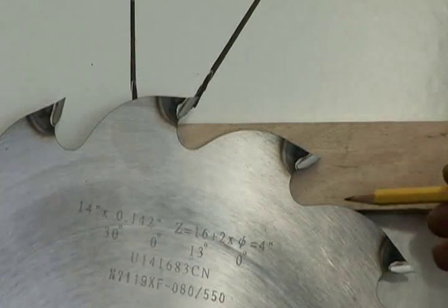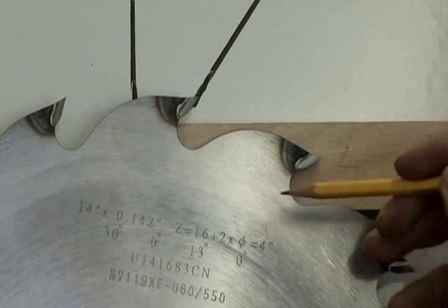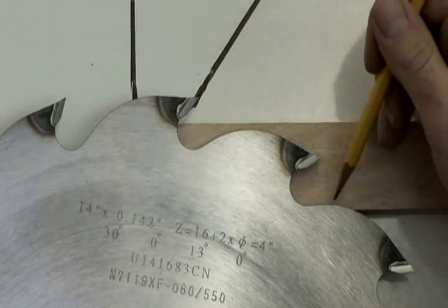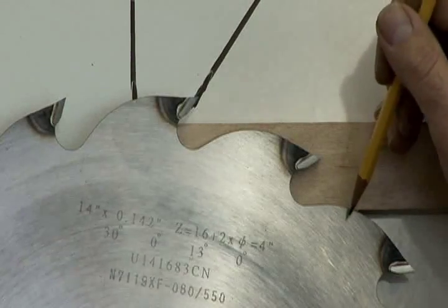It's going to give you a rougher cut on the bottom, but this is a coarse saw blade. But always have a positive hook saw blade on a table saw to avoid the material being thrown back at you.